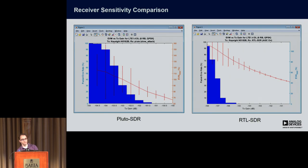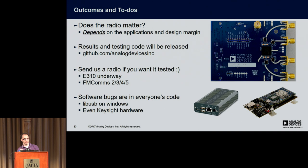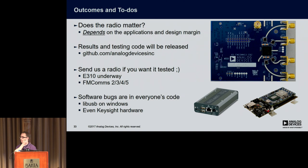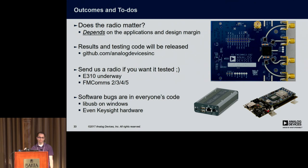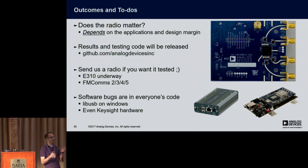If we zoom in a little bit at the end, RTL actually has a better sensitivity than Pluto — mainly because it has an LNA on the front — but it's only about 3 dB. Does the radio matter? It really depends on what you're doing. If you need a lot of gain margin in your system, you might need a more expensive radio. But if you're doing FM, you don't need to spend $10,000 on a radio. At the end of the day, it's going to give you that additional margin in your system, so it might not always be necessary — and that will determine what radio you should purchase.